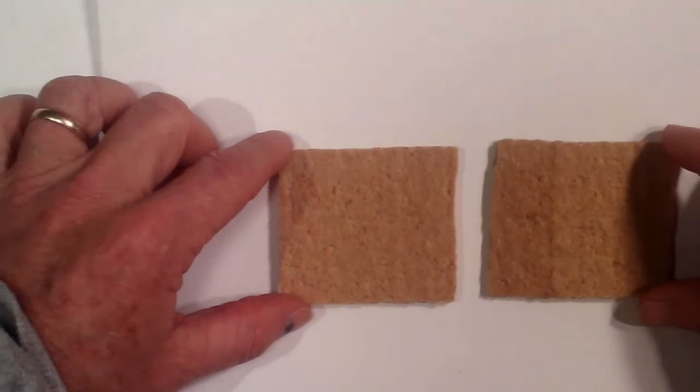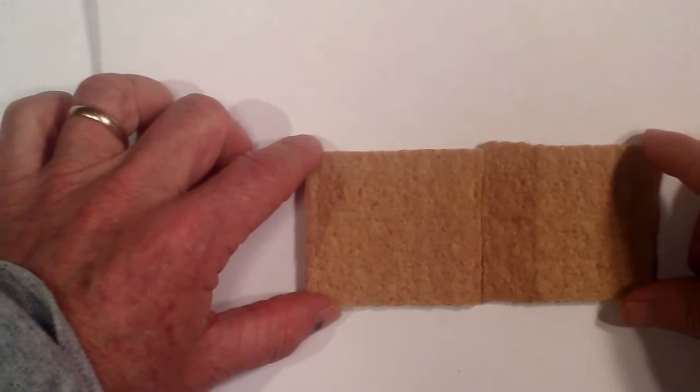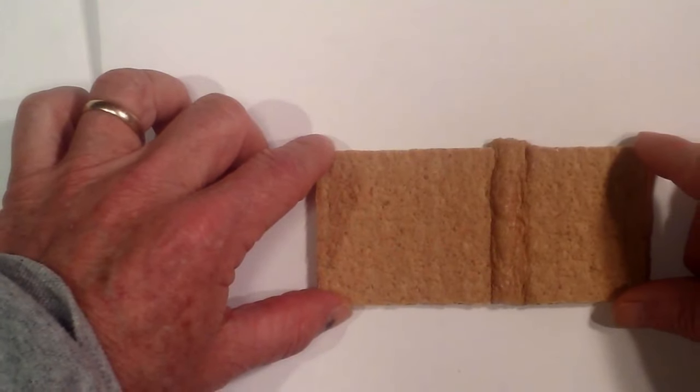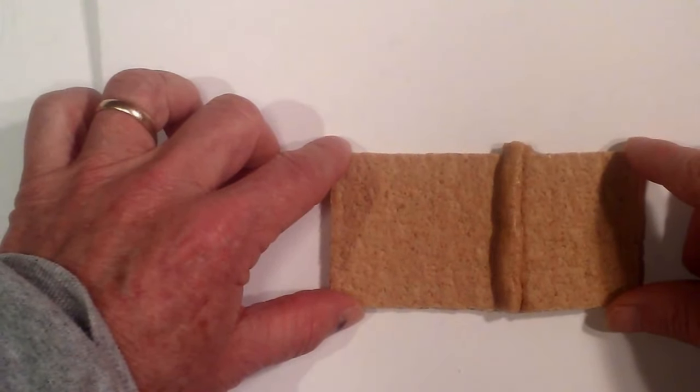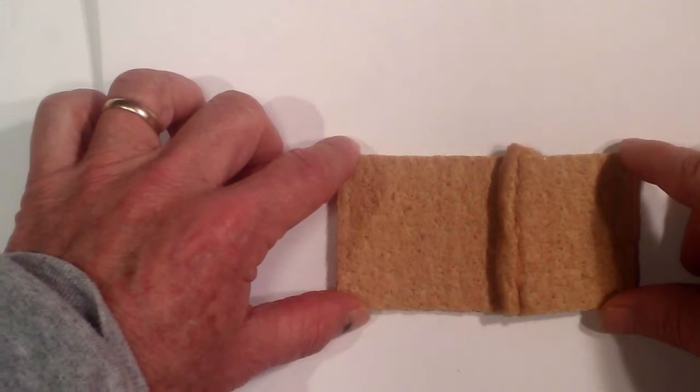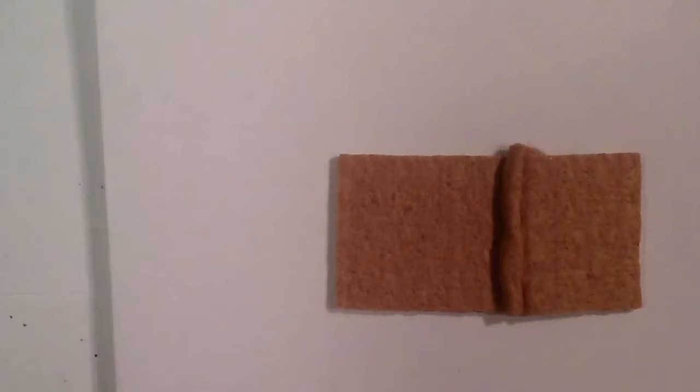These two graham crackers illustrate what happens. The two plates buckle and create folded mountains.